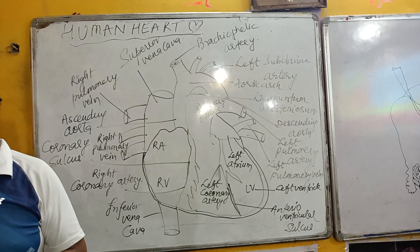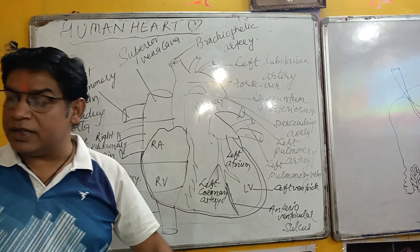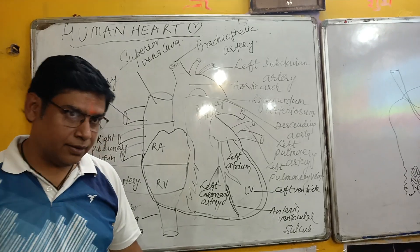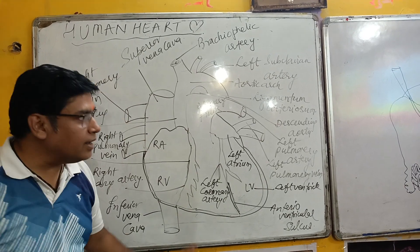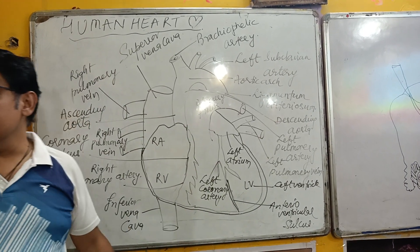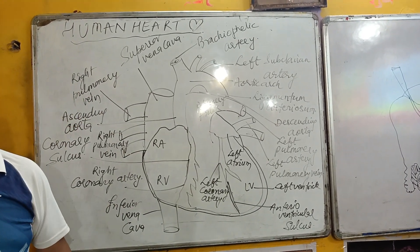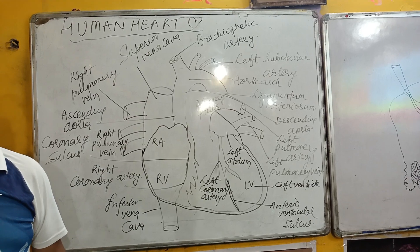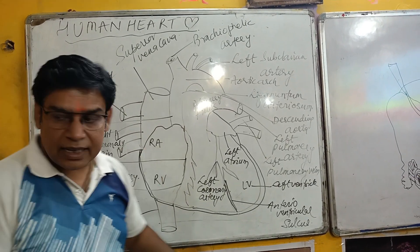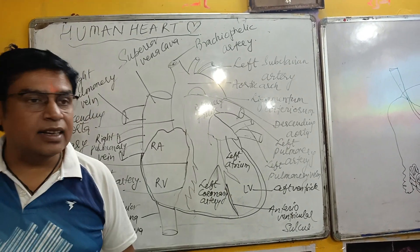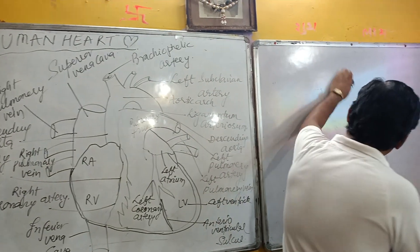The human heart is 12 cm in length and 9 cm in width.